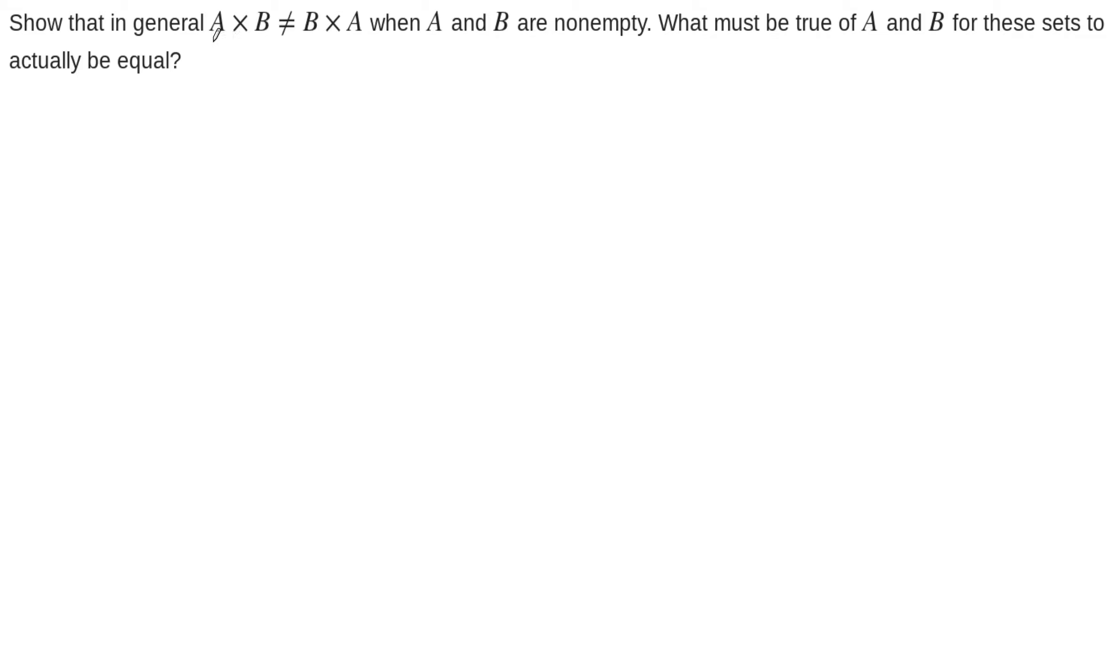In this example, we're asked to consider the Cartesian product of two sets, A cross B and B cross A, and we're asked to show that these are not equal to each other. These are not equal to each other in general.